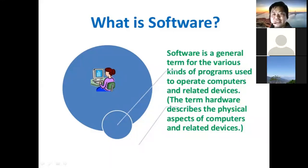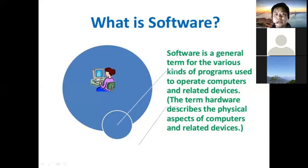The software is a general term for the various kinds of programs used to operate the computer and related devices. The term hardware describes the physical aspect of the computer and related devices. Software is a kind of program that we use for various operations or various purposes.